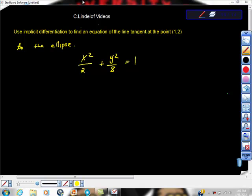AP Calculus AB. This is in preparation for the AP Calculus AB exam. I'm going to ask you to use implicit differentiation to find an equation of the line tangent at the point (1, 2) to the ellipse. And this is that ellipse right here.